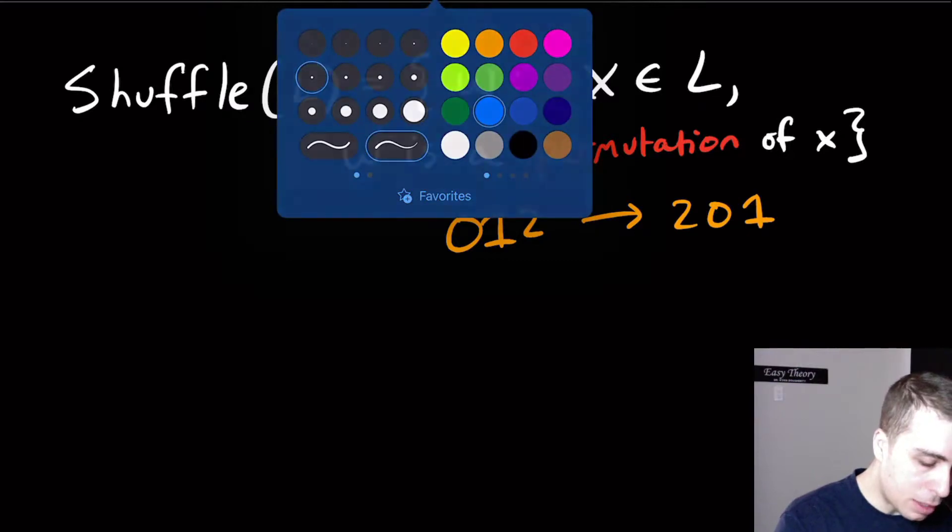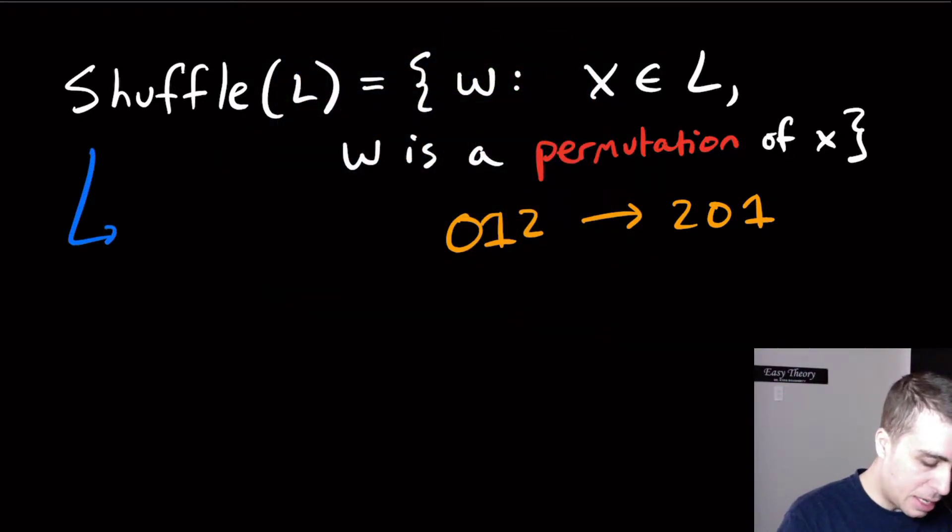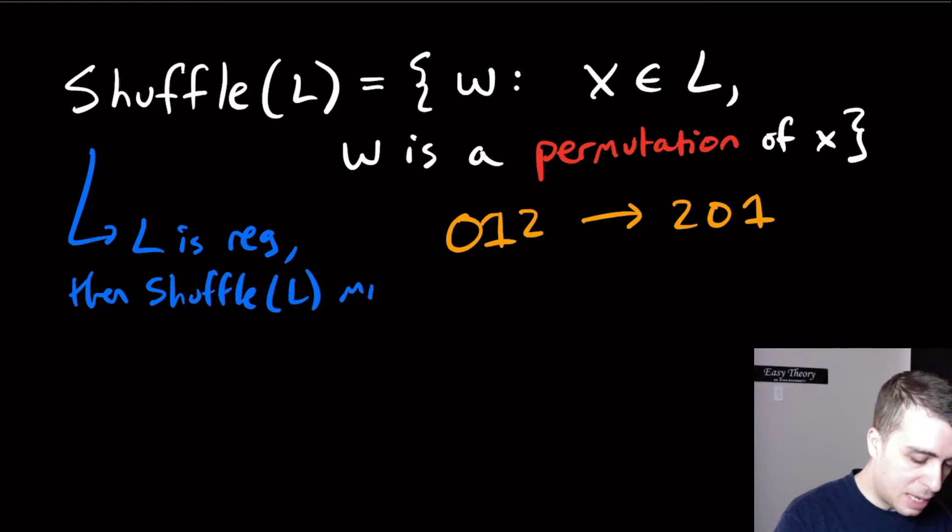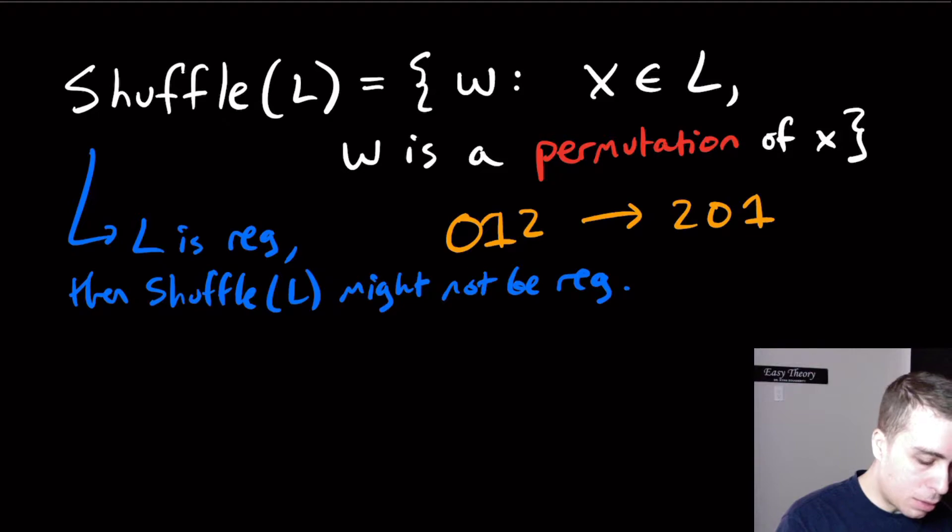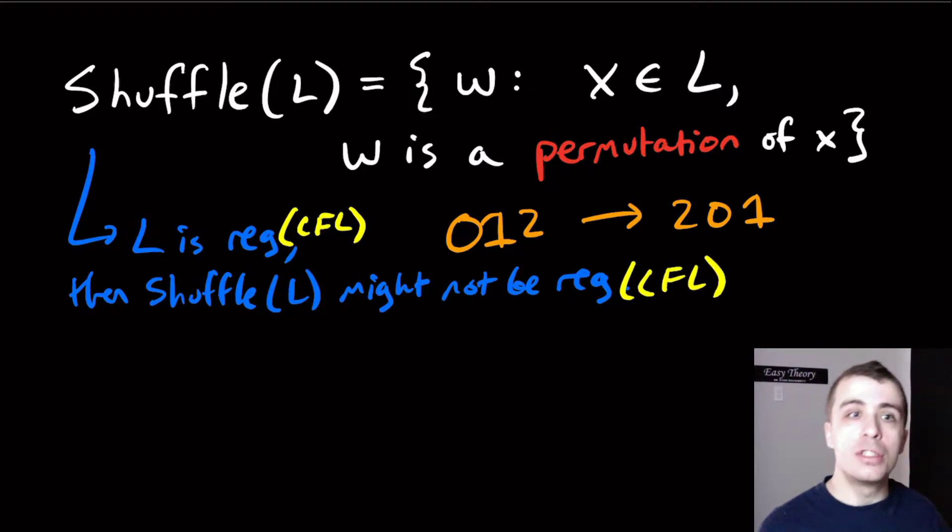What I want to do is show two things: that if L is regular, then shuffle of L might not be regular. In other words, that the regular languages are not closed under this definition of shuffle. And what we'll also show is that if it's a CFL, then it may not be a CFL either. Context-free languages are not closed under this definition of shuffle.